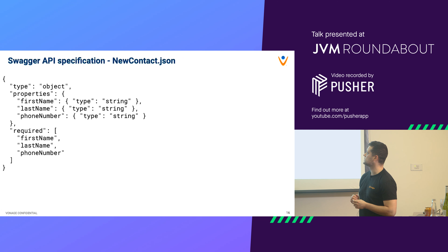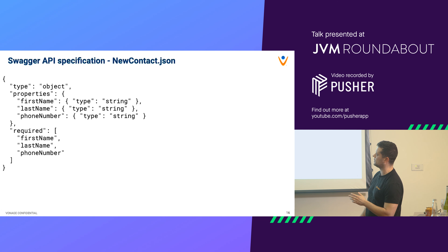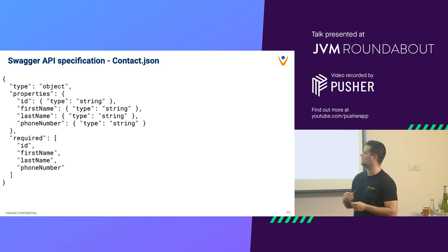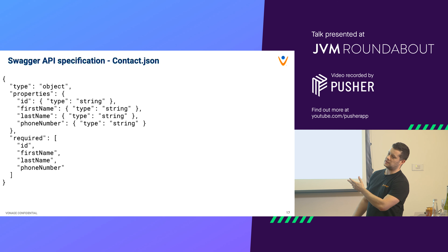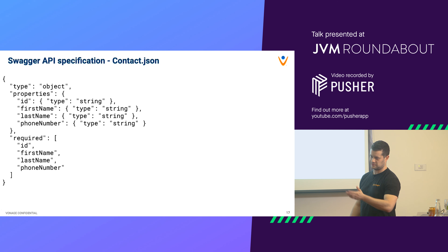For the JSON schema definitions: for new_contact you have three required properties — first name, last name, and phone number — all strings, for the sake of simplicity. For contact.json you have those same fields plus an ID on top, which is typically returned by the server rather than something you specify. Swagger supports polymorphism and importing other definitions, so you don't have to repeat all of this — for the argument of fitting on a slide, it's the same set of fields plus the additional ID.